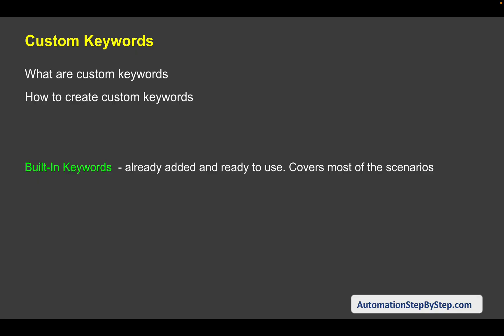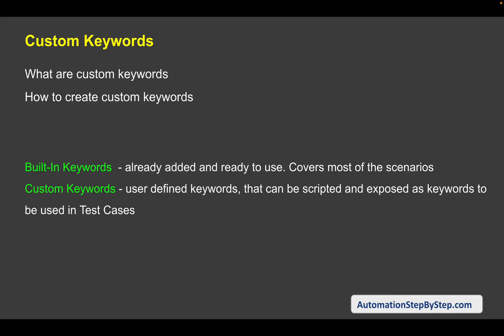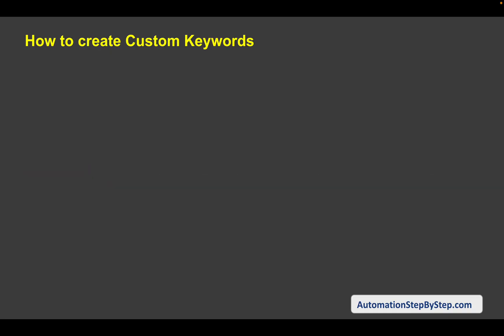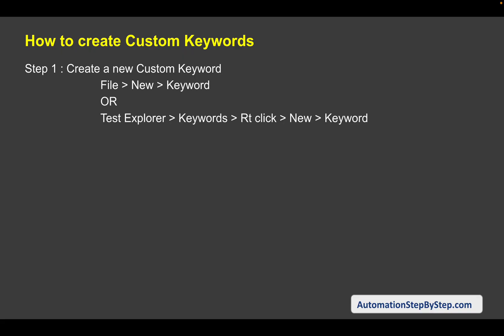In both of these scenarios, we can create custom keywords — these are user-defined keywords. That means we create these keywords, script the actions, and then expose them as keywords. These keywords will then be present as custom keywords in our Katalon Studio. So step number one is we will create a new custom keyword. You can go to File > New > Keyword, or directly go to the Keywords folder in your test explorer, right-click, and say New Keyword.